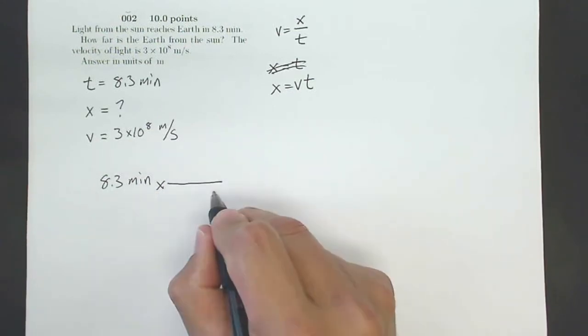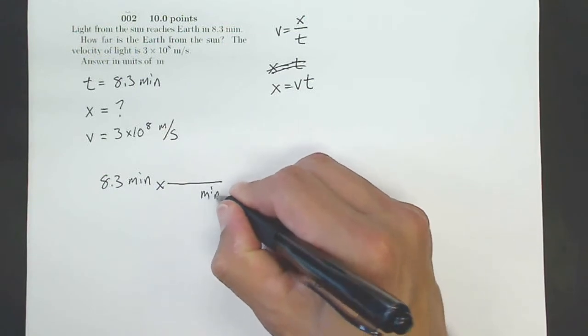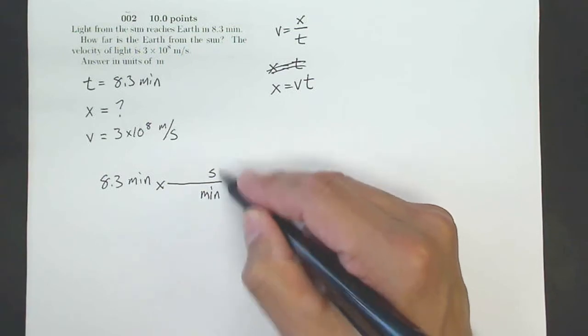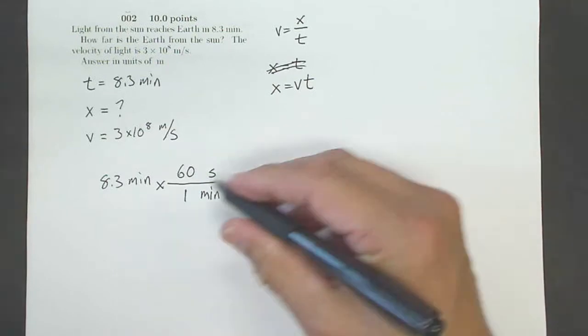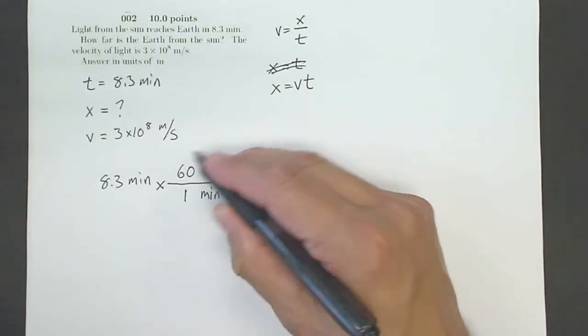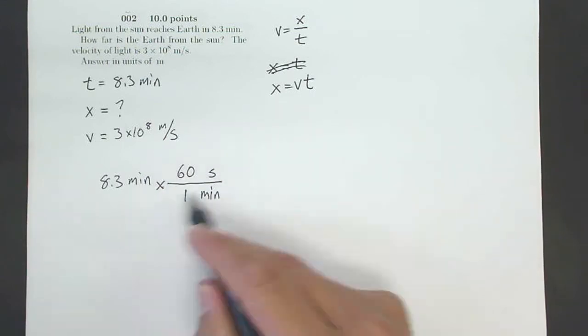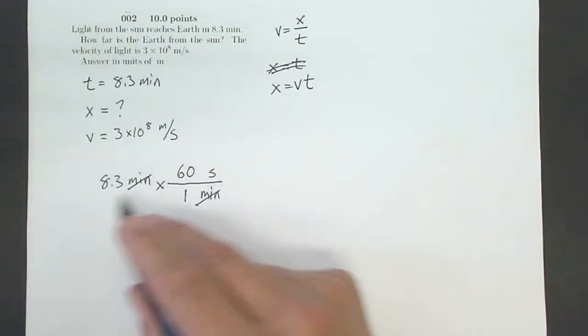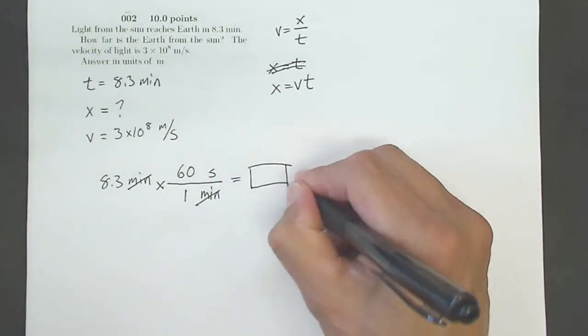The way I do that is a standard conversion. I like to write times and draw a line. And take whatever's up here and put it down here. So I'll put minutes here. And then I want to convert to seconds. I happen to know the relationship between minutes and seconds, where one minute is the same thing as 60 seconds. As long as I have the same on the top and the bottom, where this is equivalent to that, then I can do my conversion and not change the amount that I have. So minutes is on the bottom, minutes is on the top. 8.3 times 60 will give me some answer in terms of seconds.